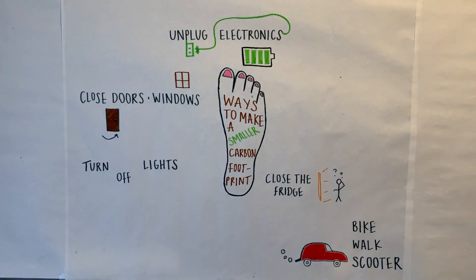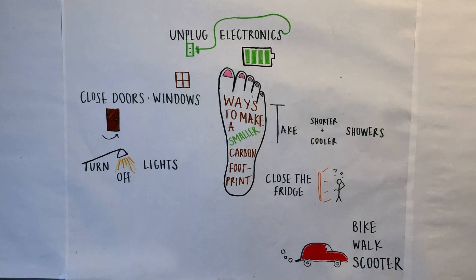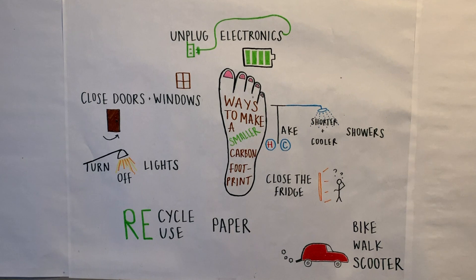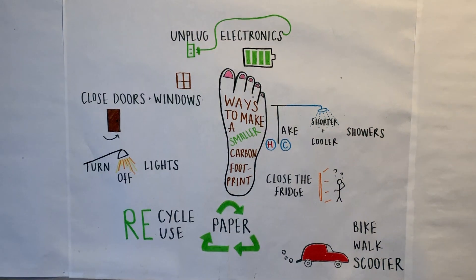Turn off the lights — do you really need lights on during the day? And take shorter and cooler showers. When you turn those knobs, it's not magic making the water hot — it's a heater, and it takes a lot of energy to heat up that water. Next, recycle and reuse paper at home and at school. It takes 70% less energy to recycle paper than to create new paper from trees.